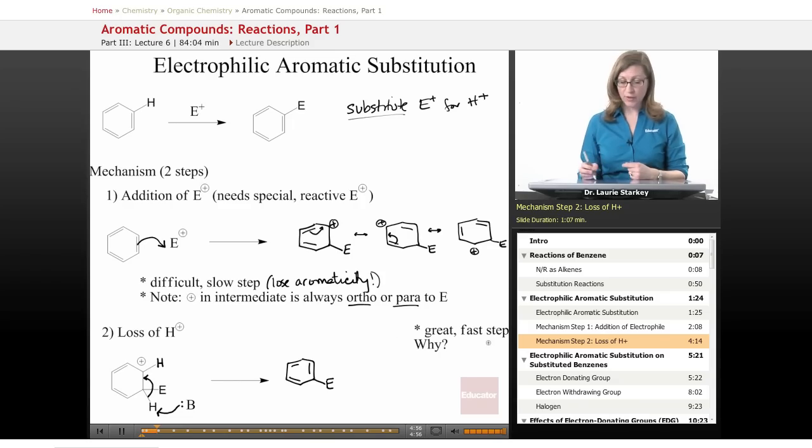So now, the first step was the rate determining step. This step is super easy. That's why you can use any base at all. Super easy, really fast. What's so great about this second step? Well, not only do we fill this octet and get rid of the carbocation, but at the same time we regain our aromaticity. So any step that gains aromaticity is going to be a really downhill race and a very fast step.